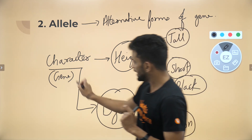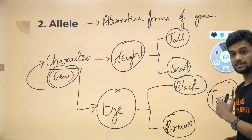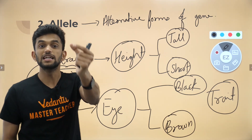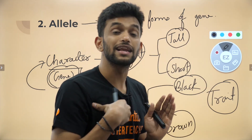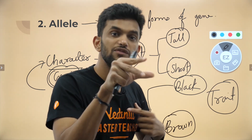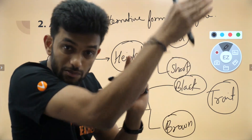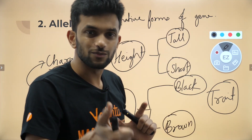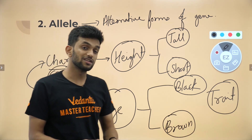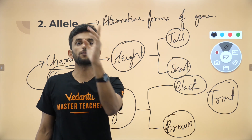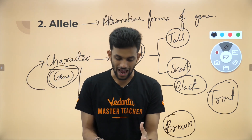So a gene is like a character, whereas an allele is a trait. A trait is used to express an individual — for example, 'Amrit is taller' is a trait. A character is general and applies to a species, but a trait differentiates individuals. To summarize: a gene is a segment of DNA which codes for a particular character, whereas an allele is an alternative form of a gene — essentially a trait.